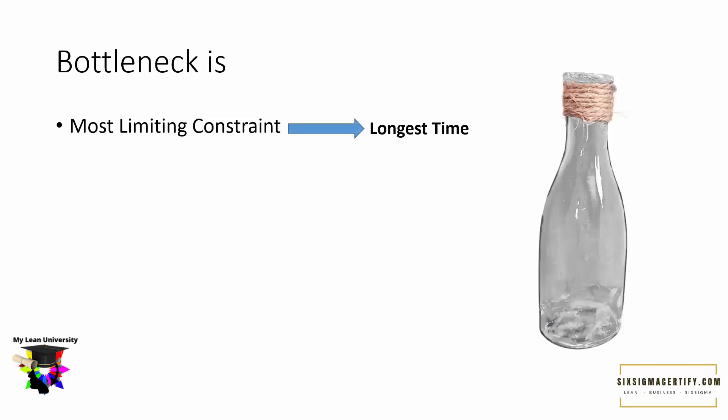Generally we consider the process with the longest time to be the bottleneck, but that is not always exactly true. The bottleneck can be the process taking the longest time in manufacturing or transport, but sometimes it is also the process taking the maximum cost, the most complicated one, or even the process outside of our control. If we cannot change the different aspects of a process as per our will, then that step is likely our bottleneck. The bottleneck may be man, machine, or material.